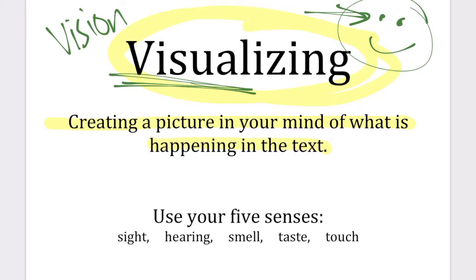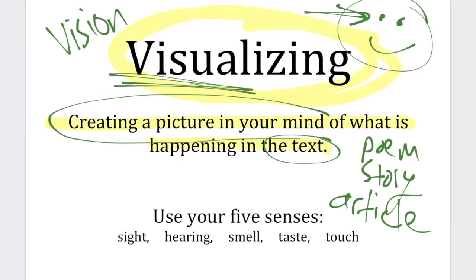Whenever you read a text, and that could mean a poem, a story, or an article, you should always be trying to use your imagination to create a picture in your mind of what's happening when you're reading. In order to do that, you have to imagine using your five senses as you read.